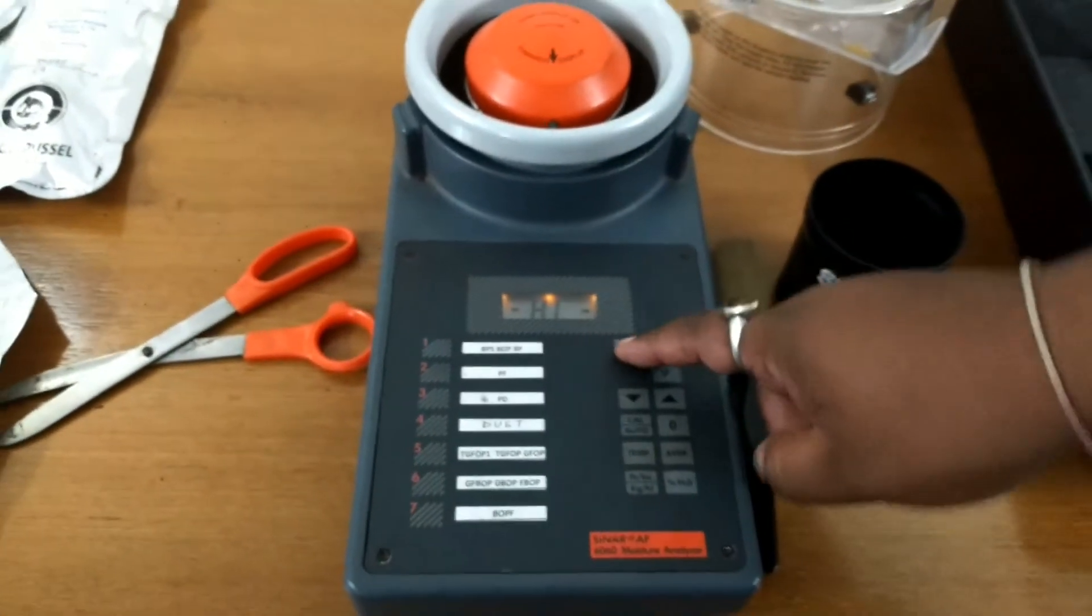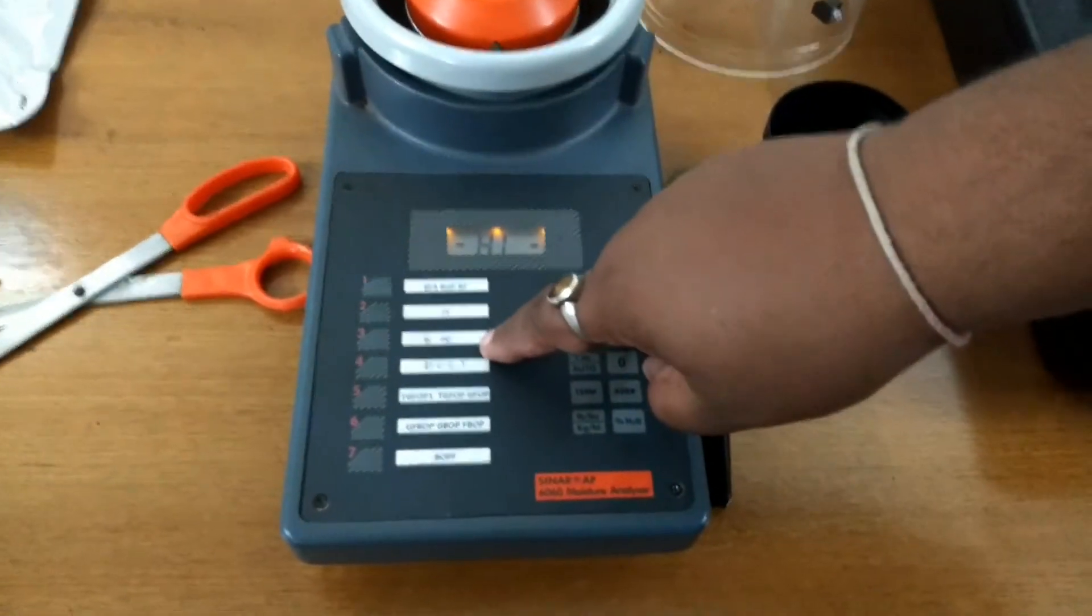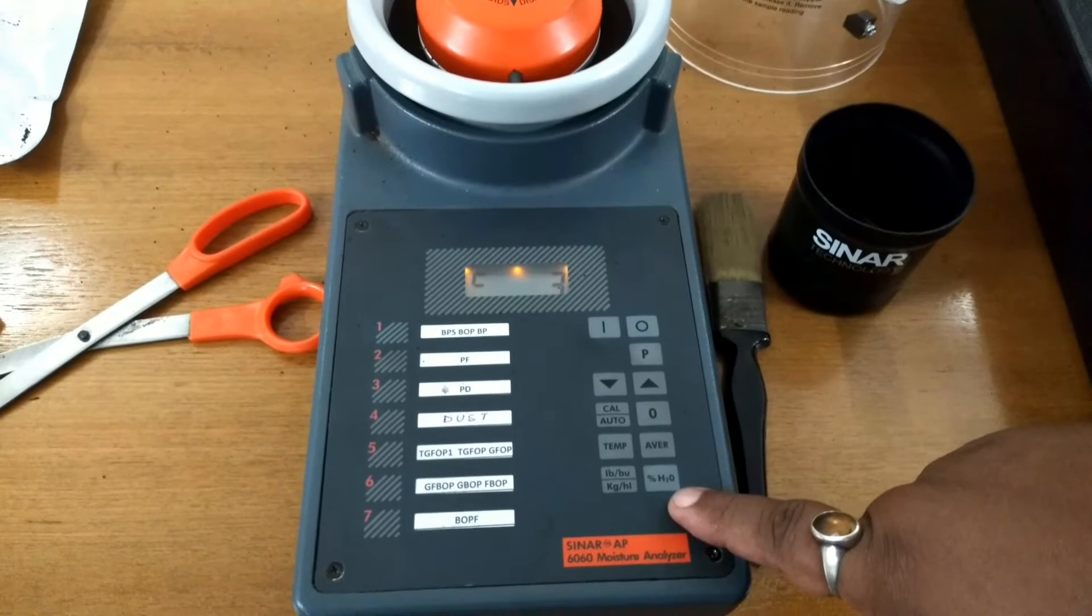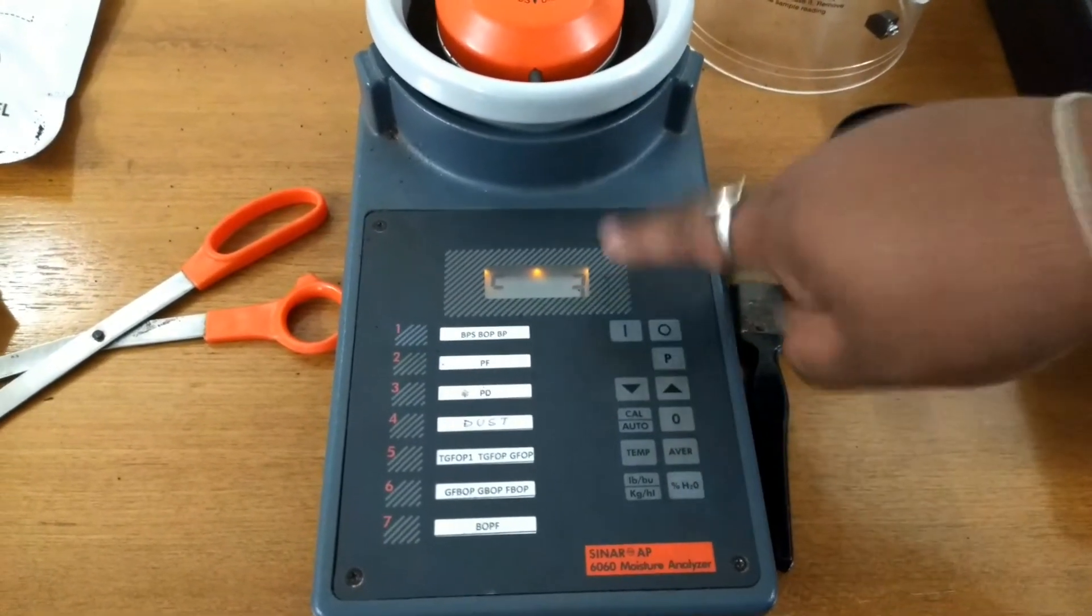Now, switch on the machine. PD is channel number 3, so we press channel number 3, and then we press H2O. Let us see what it shows.